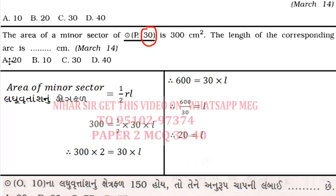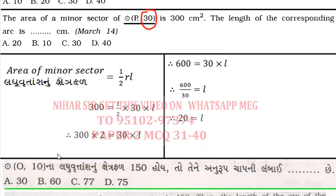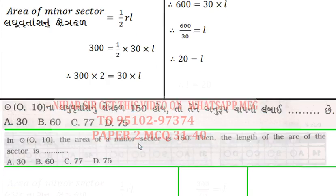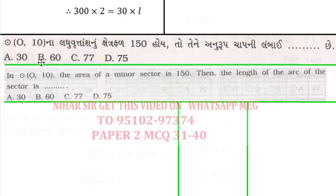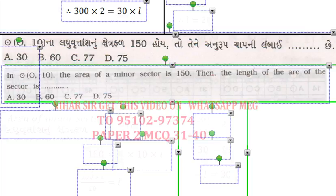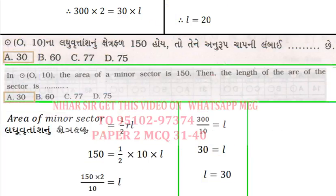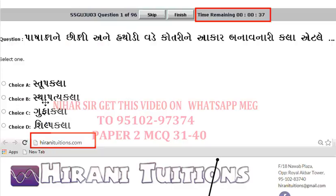This question was asked in the March 2014 examination. In the textbook version, the values are different: center P, radius 10, minor sector area 150. The method is the same. Try it yourself — the approach is identical; only the numbers differ (150 instead of 300, 10 instead of 30).